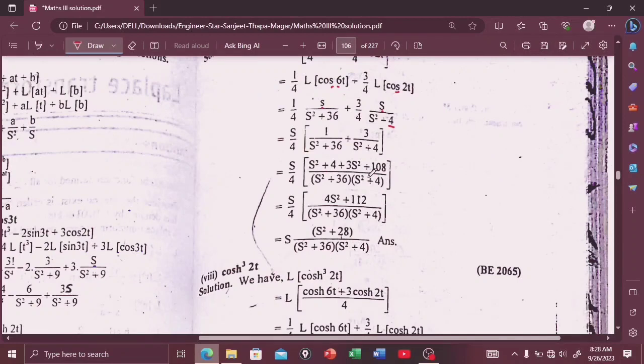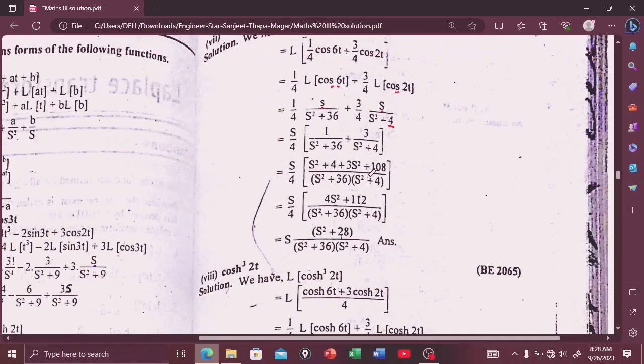It will be taking 4 common, it will be 1 over s² plus 36 plus 3 over s² plus 4. Now multiplying this we get s² plus 4 in the numerator, and multiplying this we get 3 times s² plus 36.